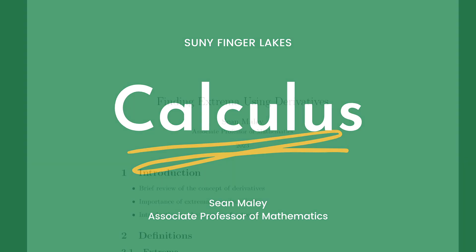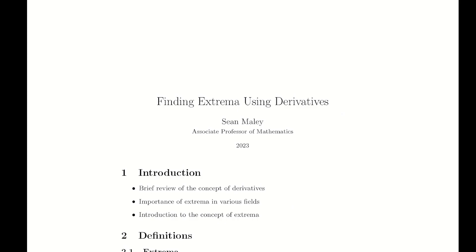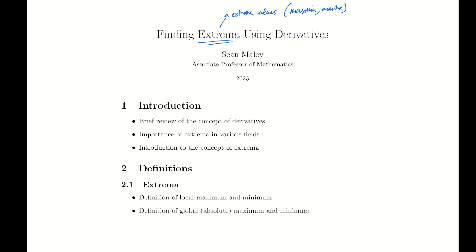Hello, good morning. Today we're going to be looking at finding extrema using derivatives. What extrema really means is just extreme values — also called maxima and minima, the plural forms of maximum and minimum. This is going to be a key skill when it comes to optimization, which is one of the bigger and more challenging topics of this course, so we're going to pre-process that and be able to find max and min values in a more automatic fashion.